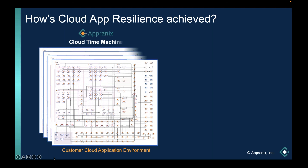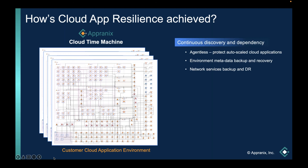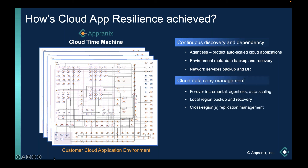When AppraniX discovers this environment, all you do is put your protection policies, and AppraniX creates something called a cloud time machine with no agents — with all the environment metadata and all the network services appropriately protected. Your cloud data copies are managed based on your policies, forever incremental, completely agentless, which also means that any auto-scaling resources will also be protected appropriately. And when the auto-scaling removes those instances, AppraniX will stop protecting them.